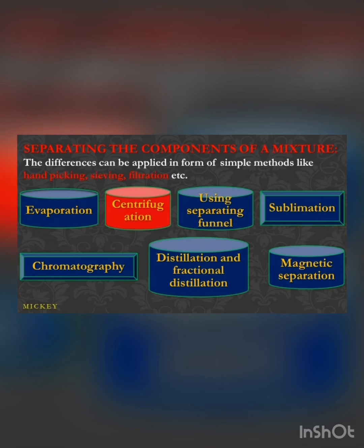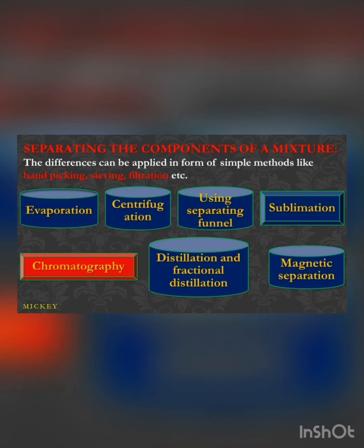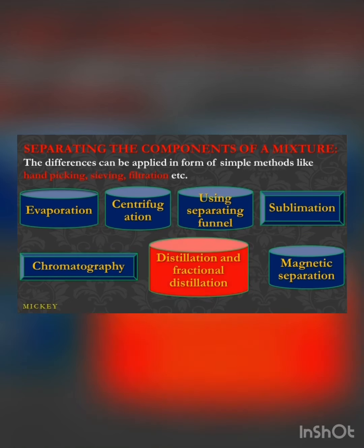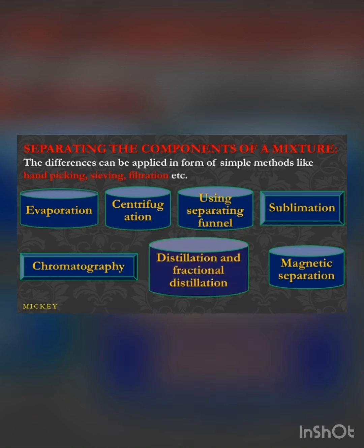We have studied about separating components in Class 6 as well, using simple methods such as hand picking, sieving, and filtration. Class 9 will focus on evaporation, centrifugation, separating funnel, sublimation, chromatography, distillation, fractional distillation, and ultimately magnetic separation.